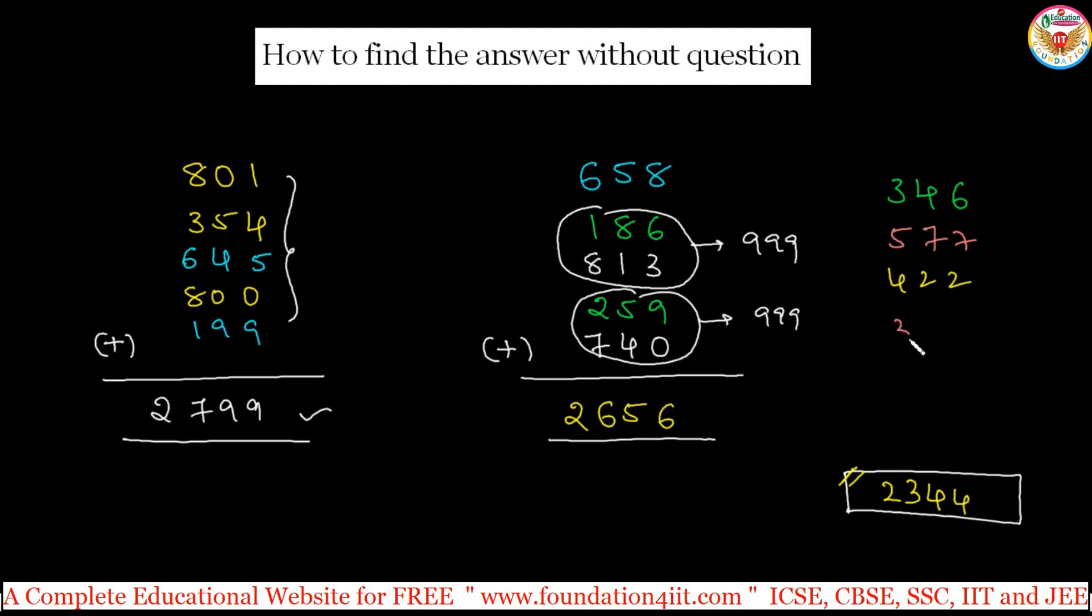Ask them to write one more three-digit number: 348. Then write under this: 9 minus 3 is 6, 9 minus 4 is 5, 9 minus 8 is 1. Now ask them to count all these numbers. The sum is exactly 2344. Then ask them to open the paper and check.